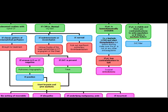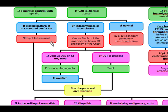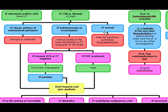On the VQ scan, if you see the classic pattern of mismatched perfusion between ventilation and perfusion, you're going to go straight to treatment with heparin and warfarin. If the VQ is normal — you did the chest x-ray and it was normal, you did the VQ scan and it's normal — at this point you can rule out any significant pulmonary thromboembolism.